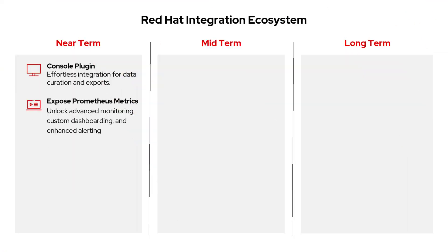On to the UX and Red Hat portfolio side, we're focusing on two key areas. First, we're building an OpenShift console plugin that integrates directly into the OpenShift web console, giving users a smoother experience for security, observability, and cluster management. Second, we'll expose Prometheus metrics to enable advanced monitoring, custom dashboards, and stronger alerting, making it easier to segment and track different security layers and workflows.